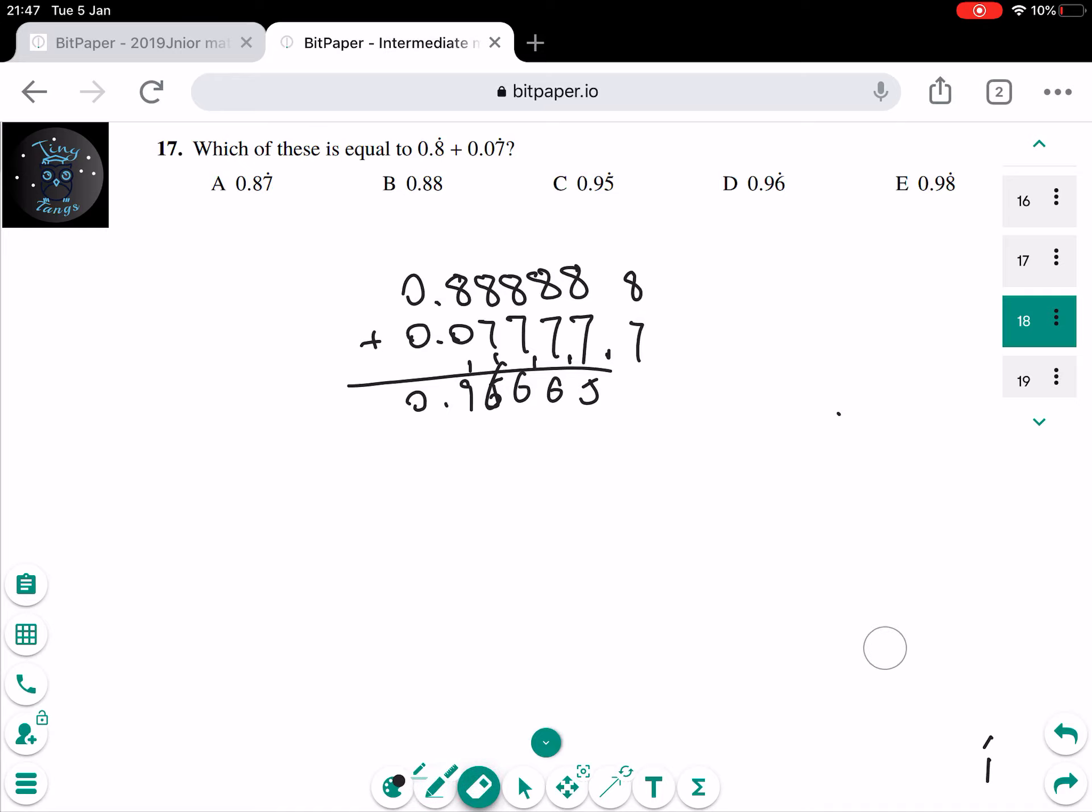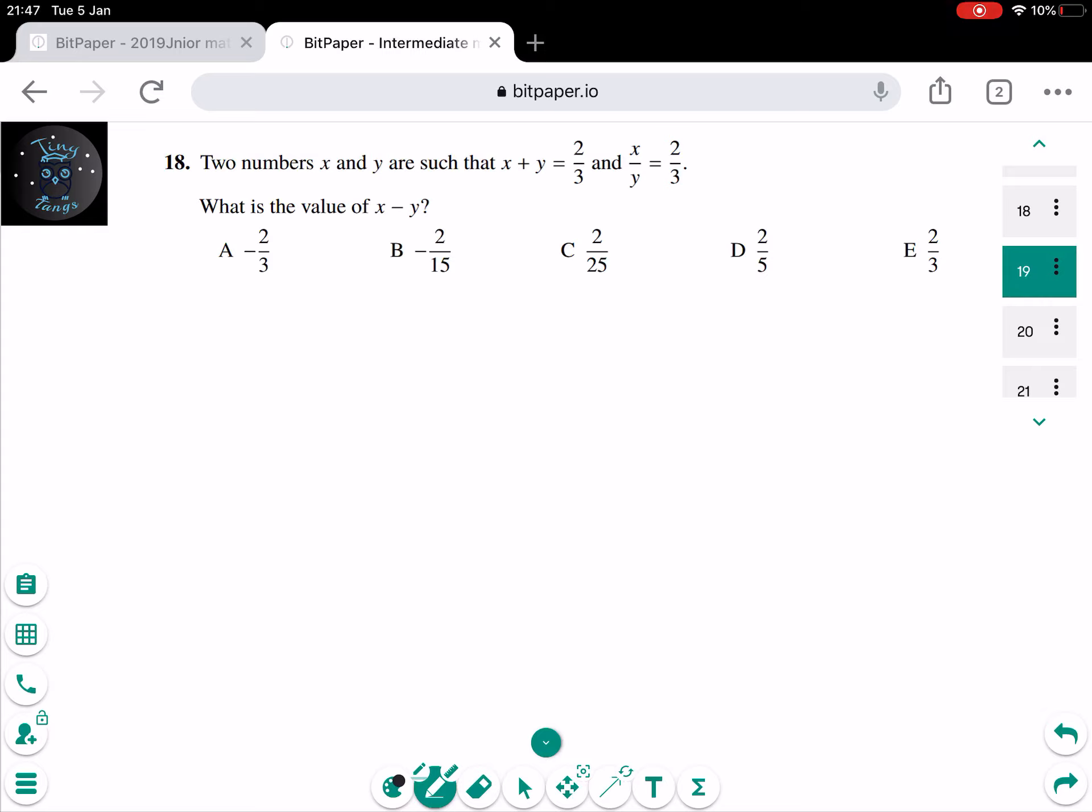So the answer to question 17 is D, which is 0.966666 recurring. And for question 18, it says 2 numbers x and y are such that x plus y equals 3 over 2 and x over y equals 3 over 2.